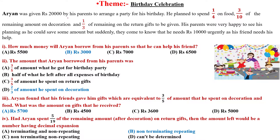Mr. Aryan was given Rs 20,000 by his parents to arrange a party for his birthday. He planned to spend one-fourth on food, three-tenths of the remaining amount on decoration, and one-third of the remaining on return gifts. His parents were very happy with his planning as he could save some amount, but suddenly they came to know that he needs Rs 10,000 as his friend needs his help. These are the questions based on this case.